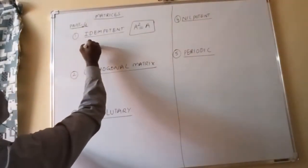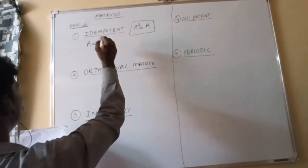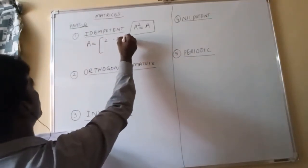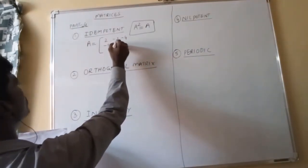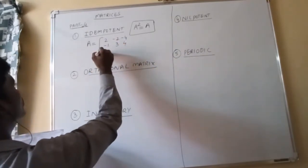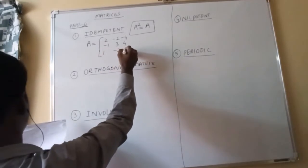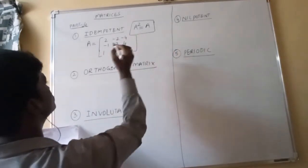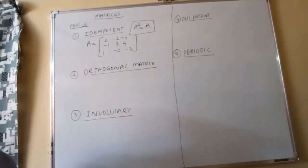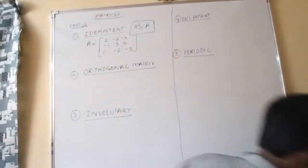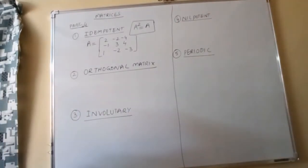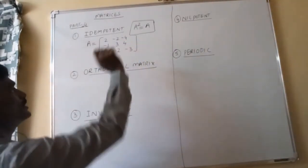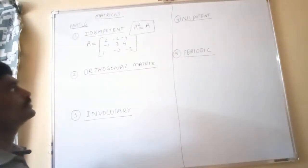An example for idempotent matrix: A is equal to the 3×3 matrix with first row 2, −2, −4; second row −1, 3, 4; third row 1, −2, −3.